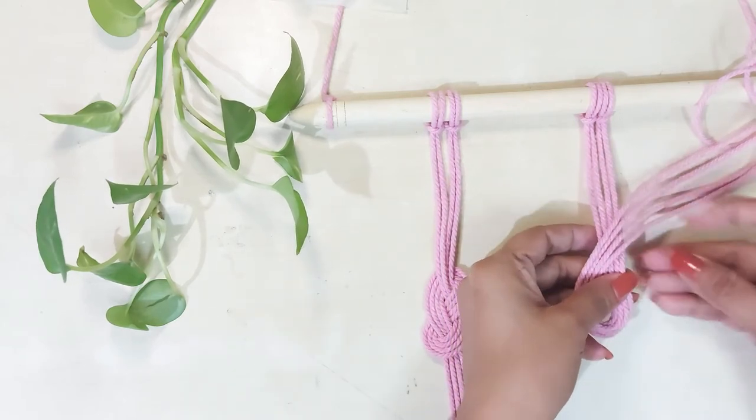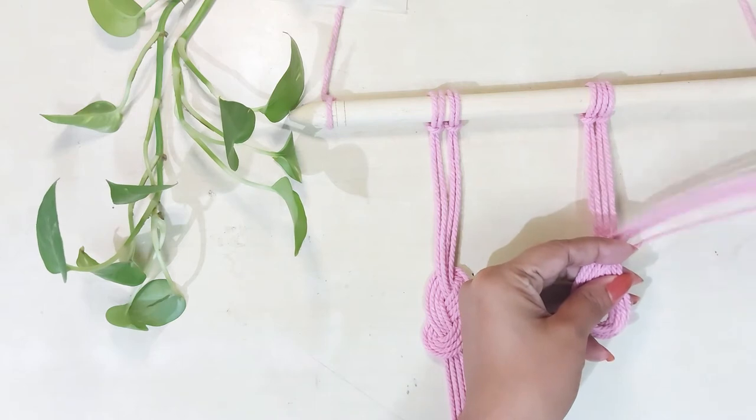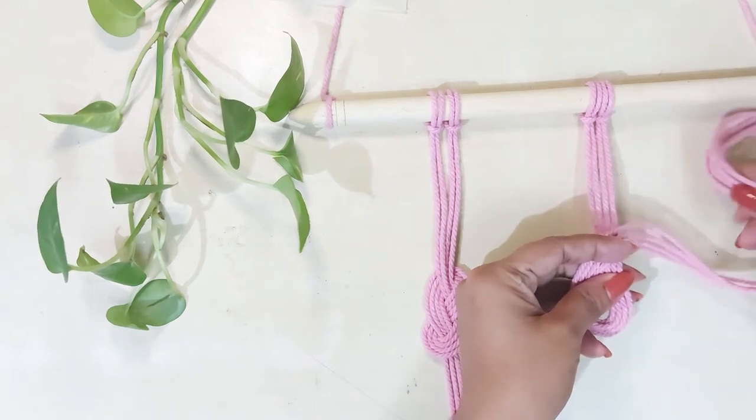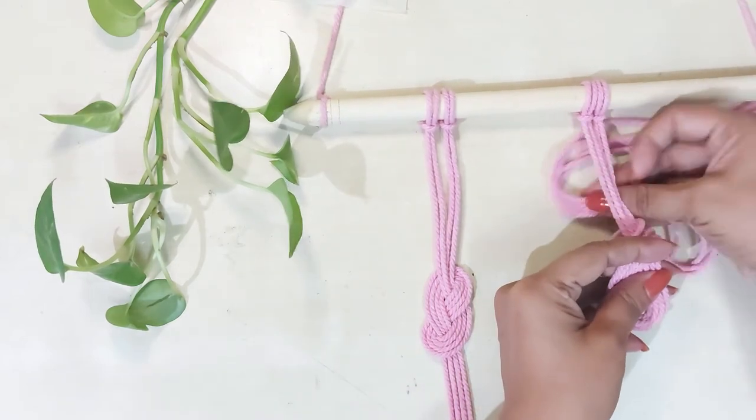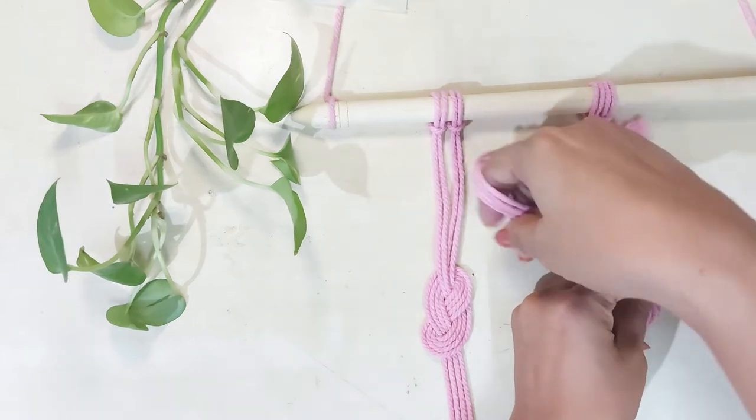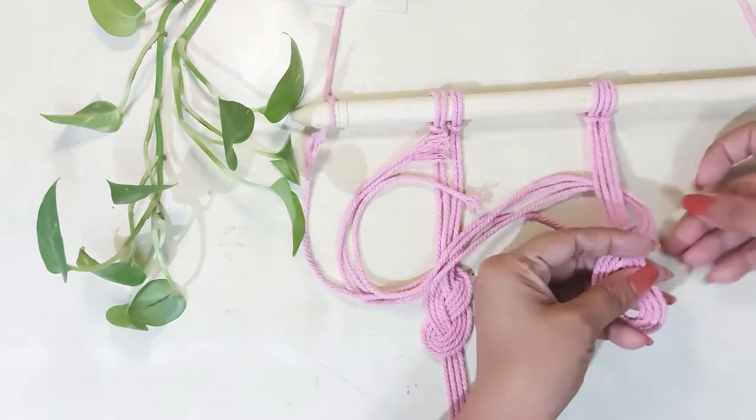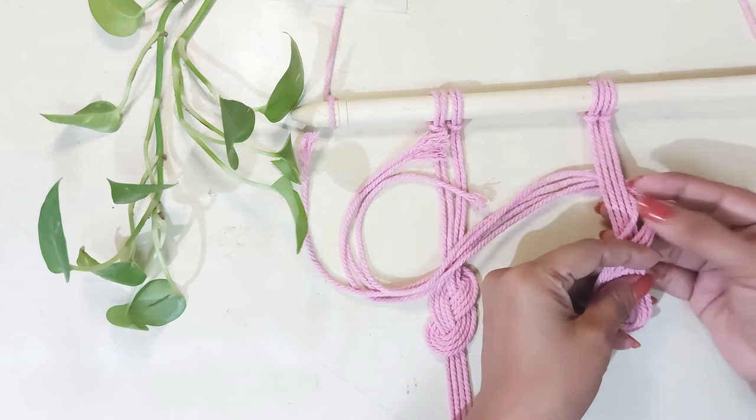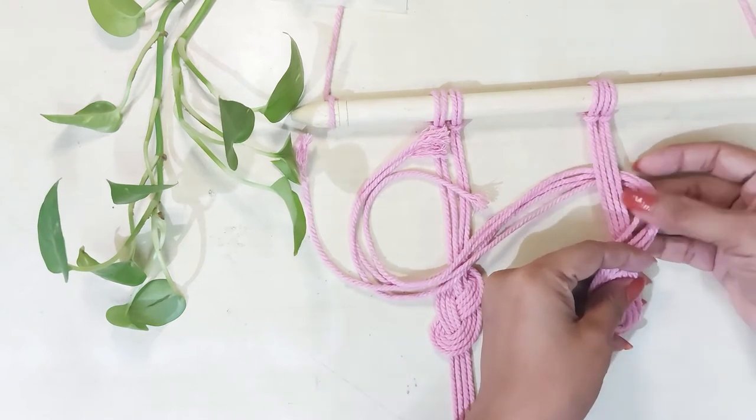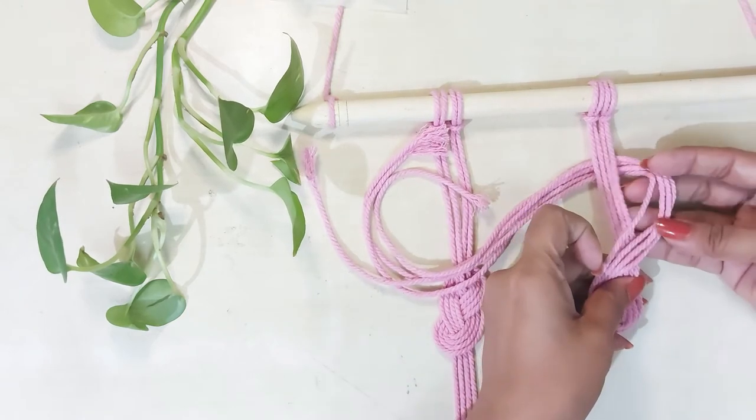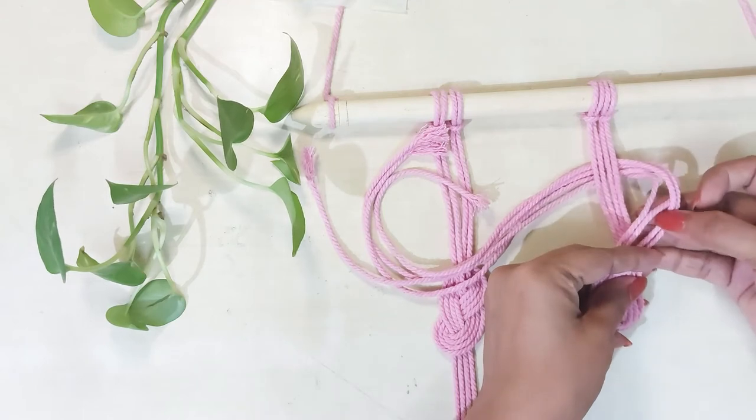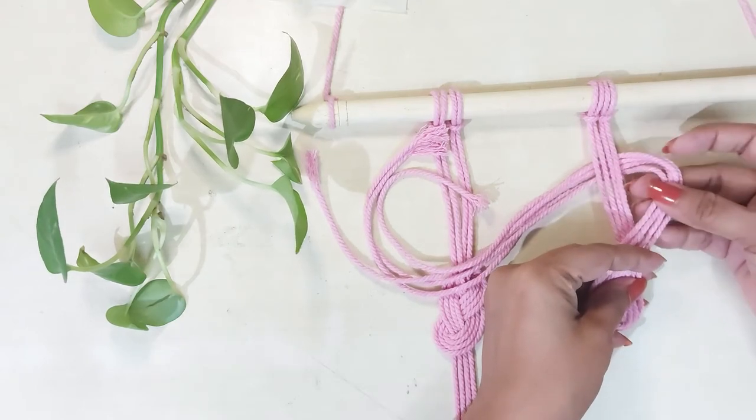Now observe how I work with the strings to make a sailor's knot. It's going to get a bit tricky to work with these four strings together. You have to keep arranging the strings in place.